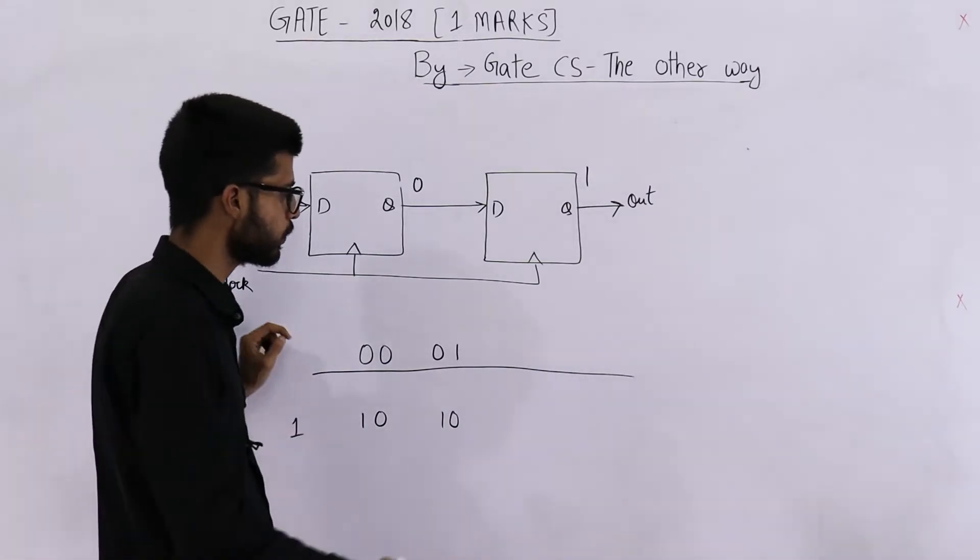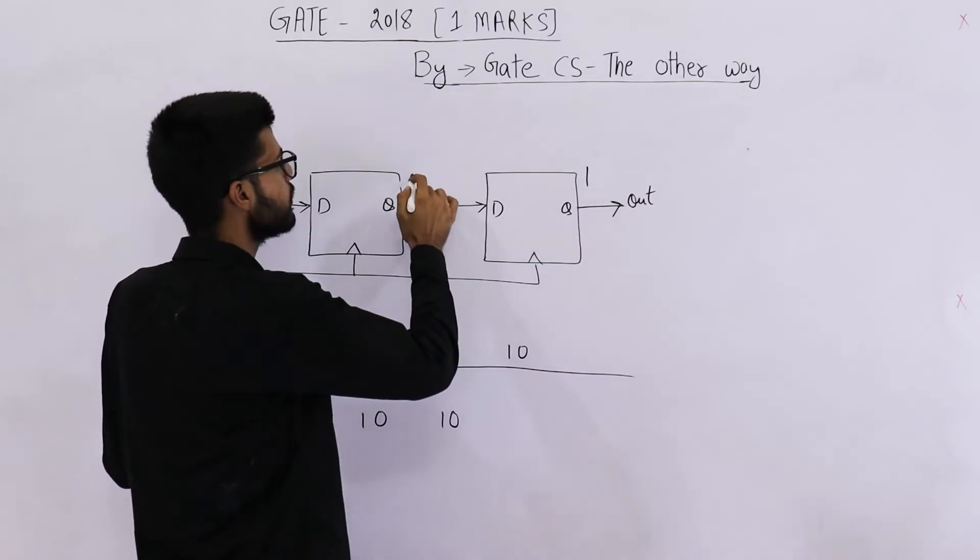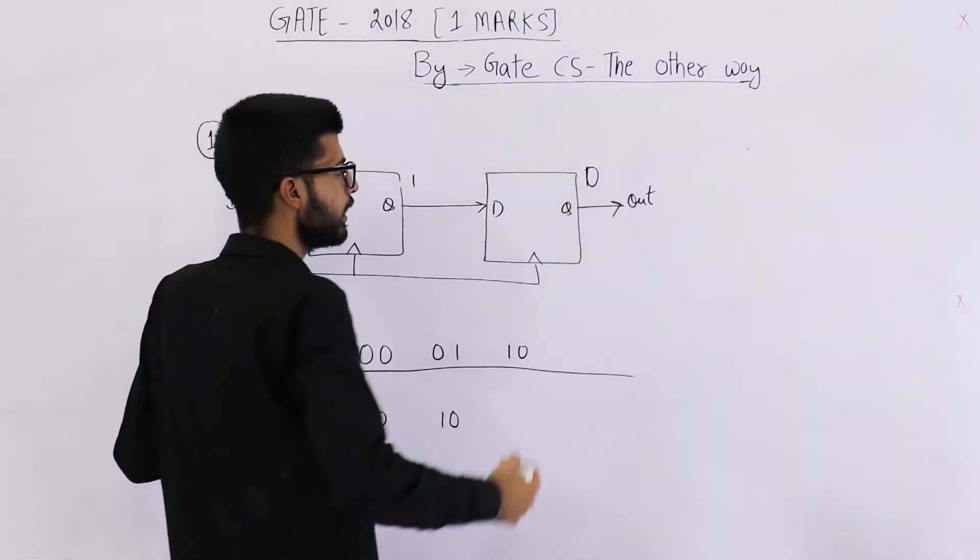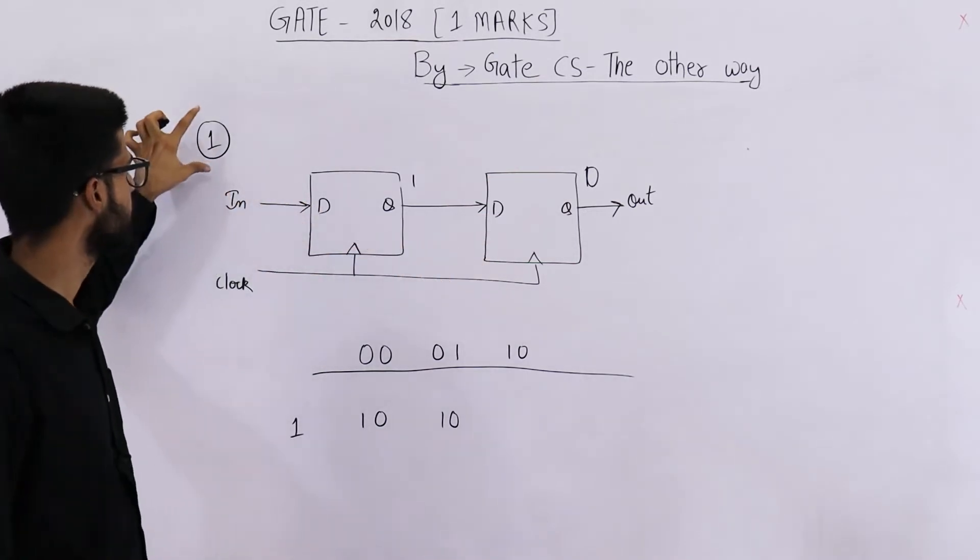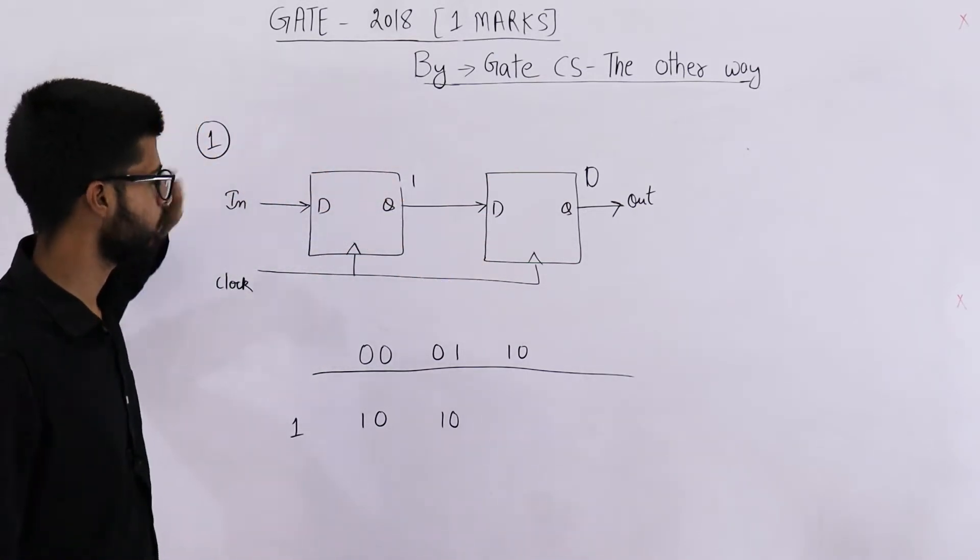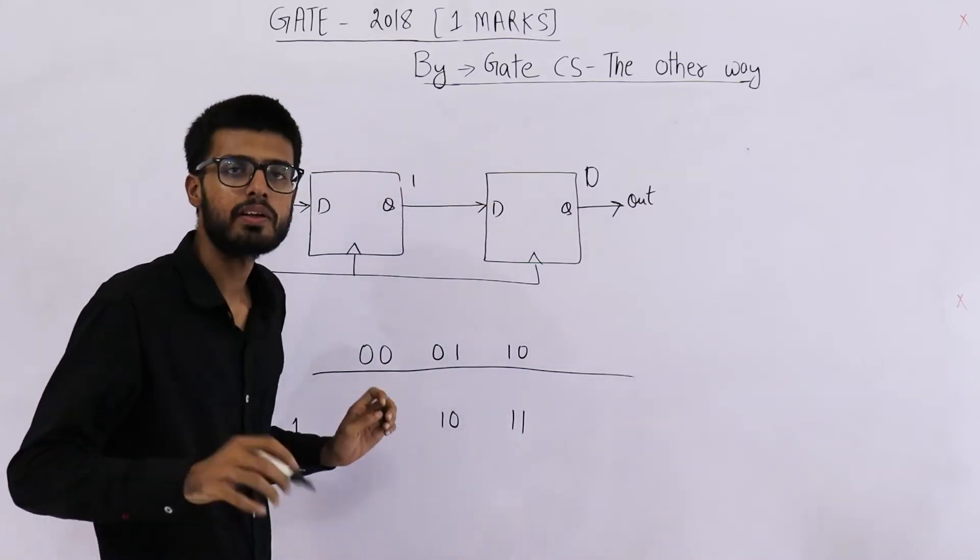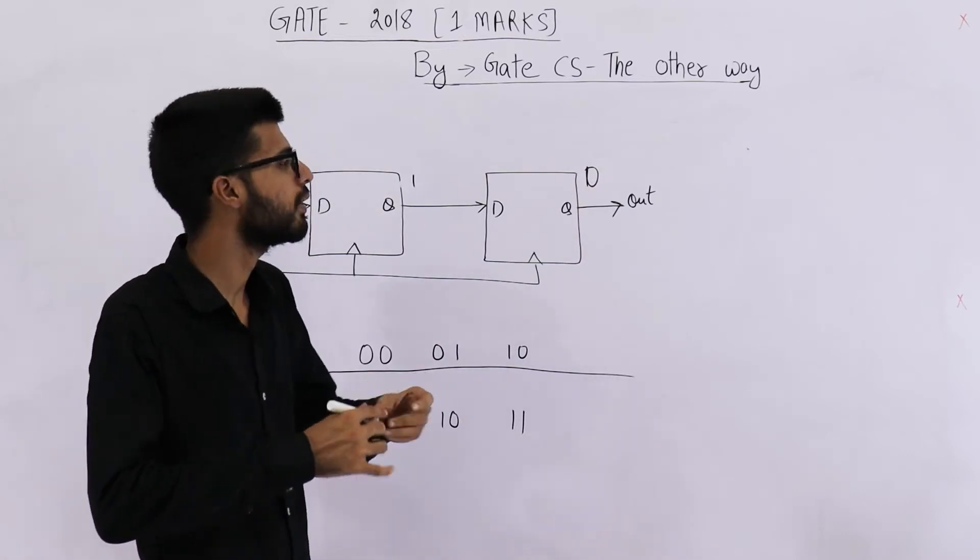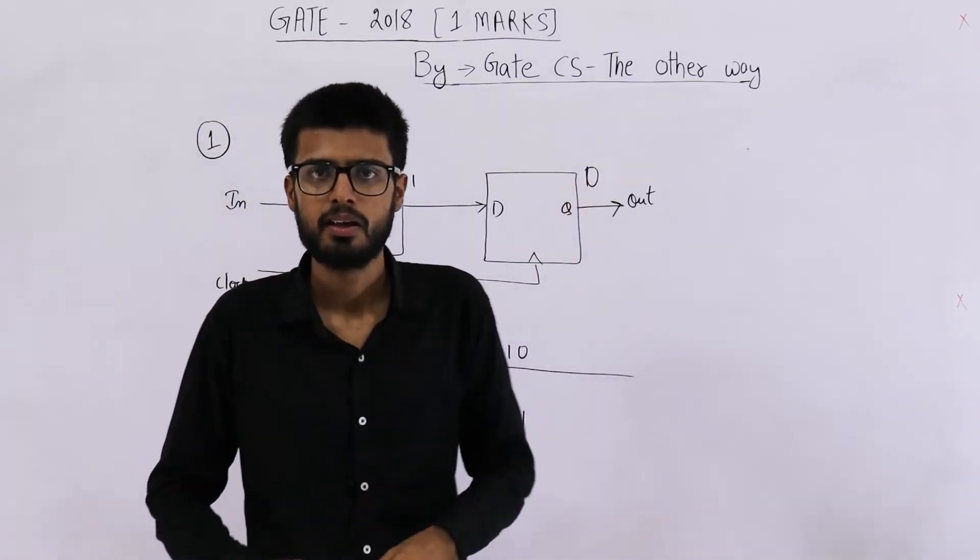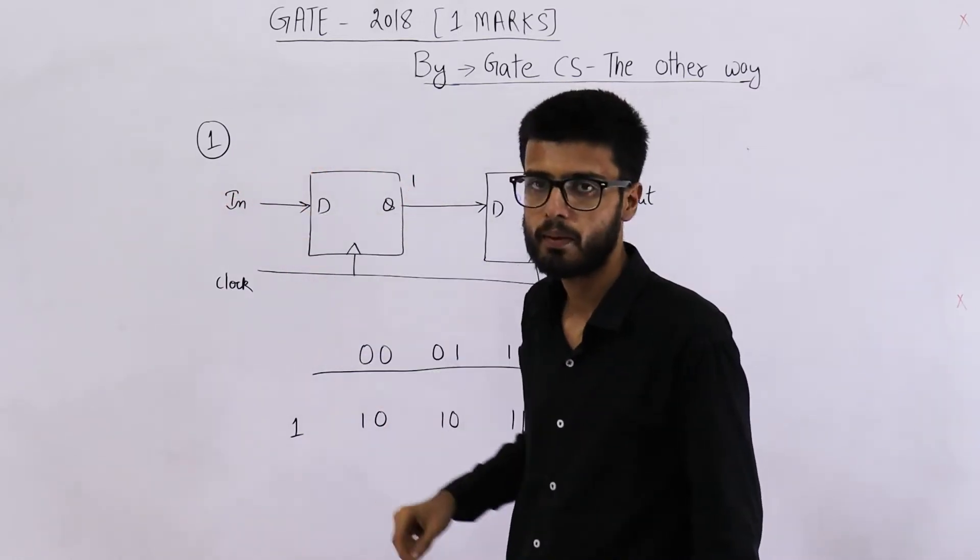Now what will happen in case of 1, 0? When the current state is 1, 0. In this case also, you can see that 0 is going to be discarded and the output will be 1, 1. Actually we don't even need to know what is the value of second output because anyways it will be discarded. So the next output is given by these two numbers.